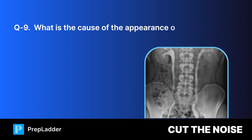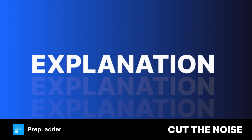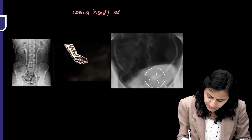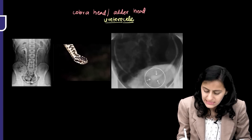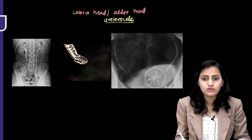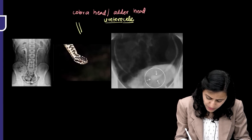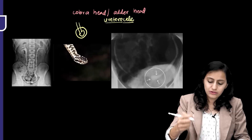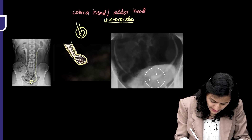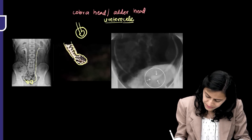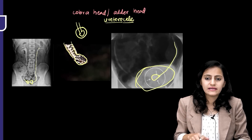Question nine: What causes the appearance observed in IVP? The correct answer is ureterocele. The cobra head or adder head appearance is seen with ureterocele — not ureterocele misspellings. The ureter at its insertion into the bladder is dilated like the head of a cobra. This bilateral ureterocele appearance is demonstrated: the ureter coming in and dilating, with the bladder visible alongside.